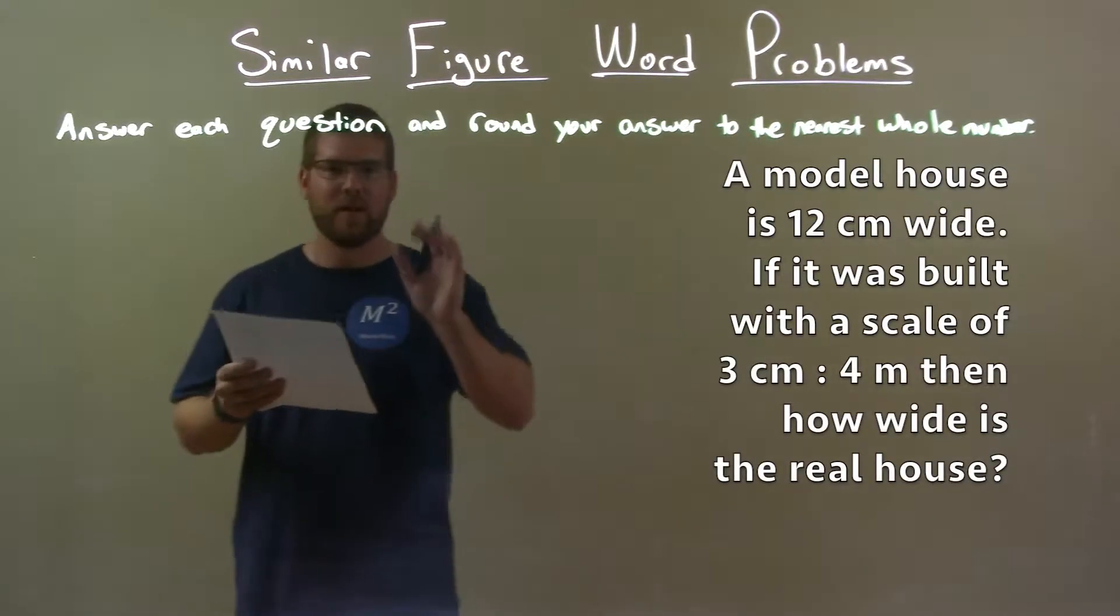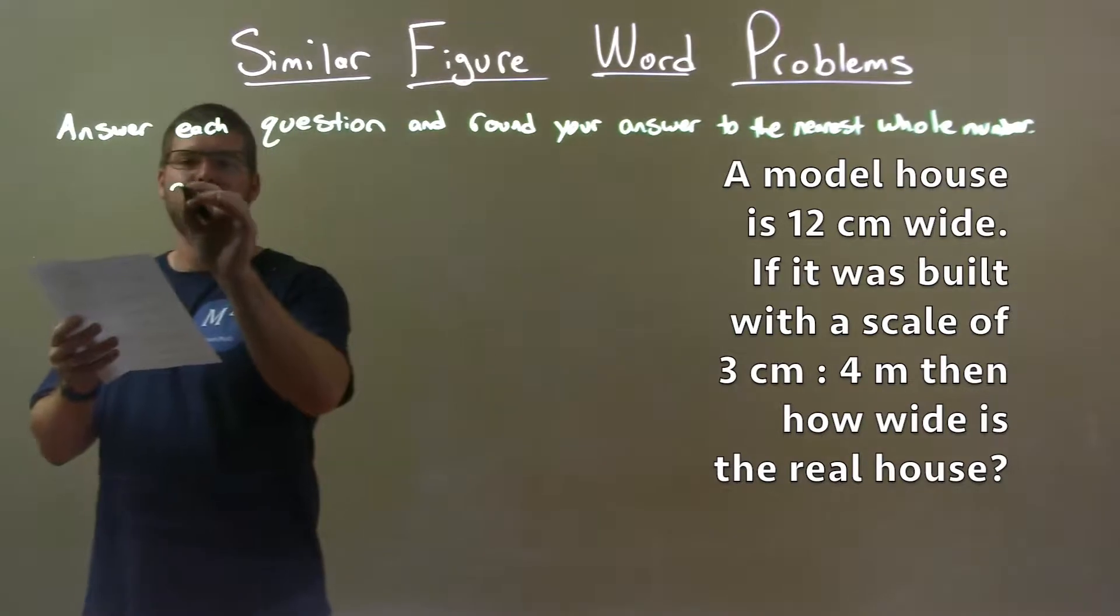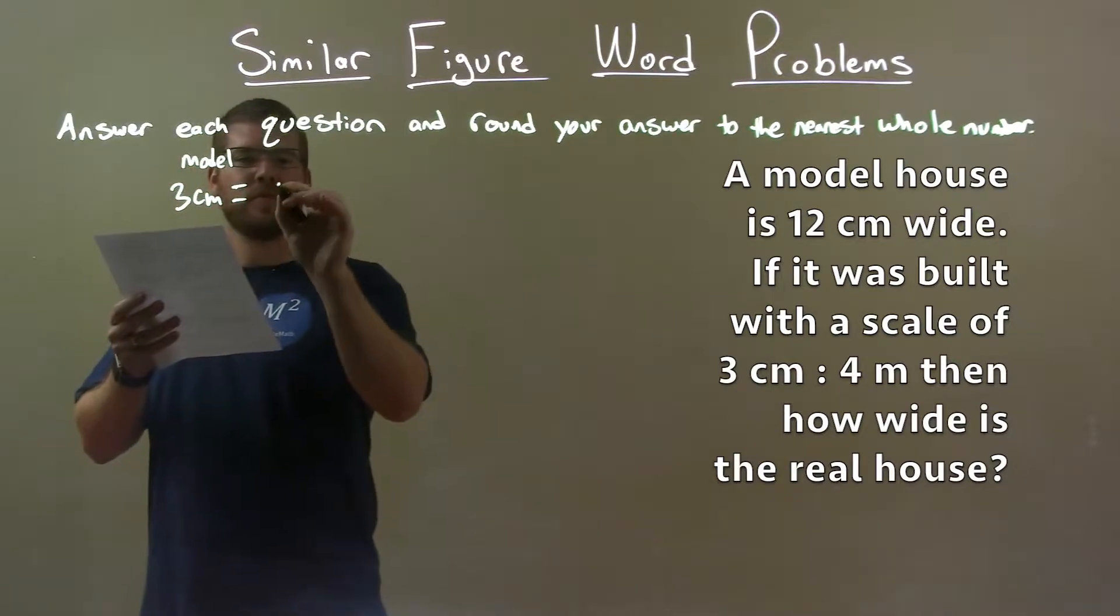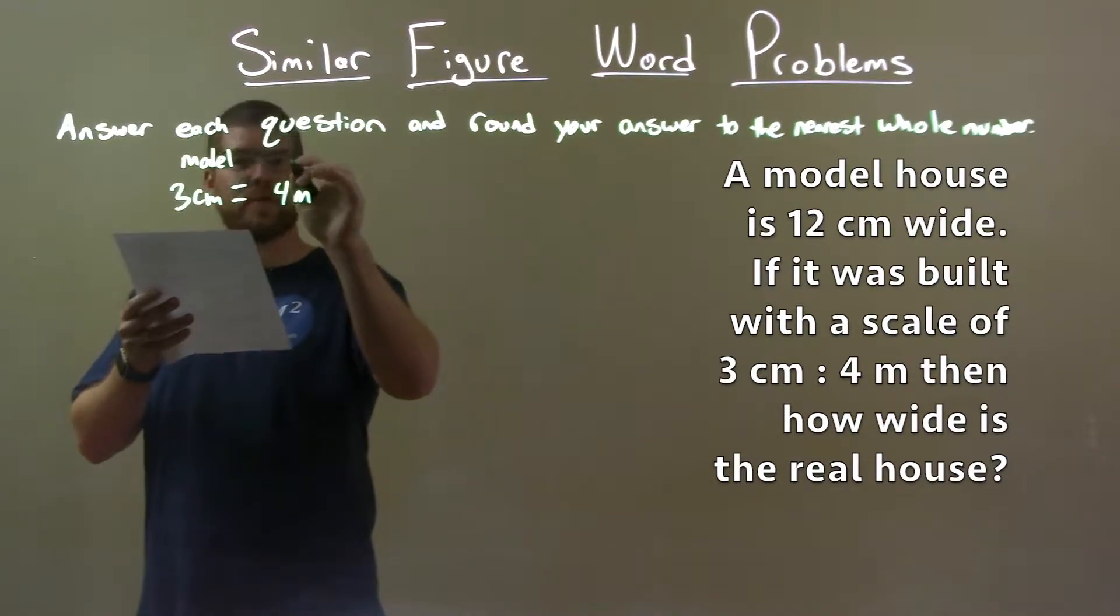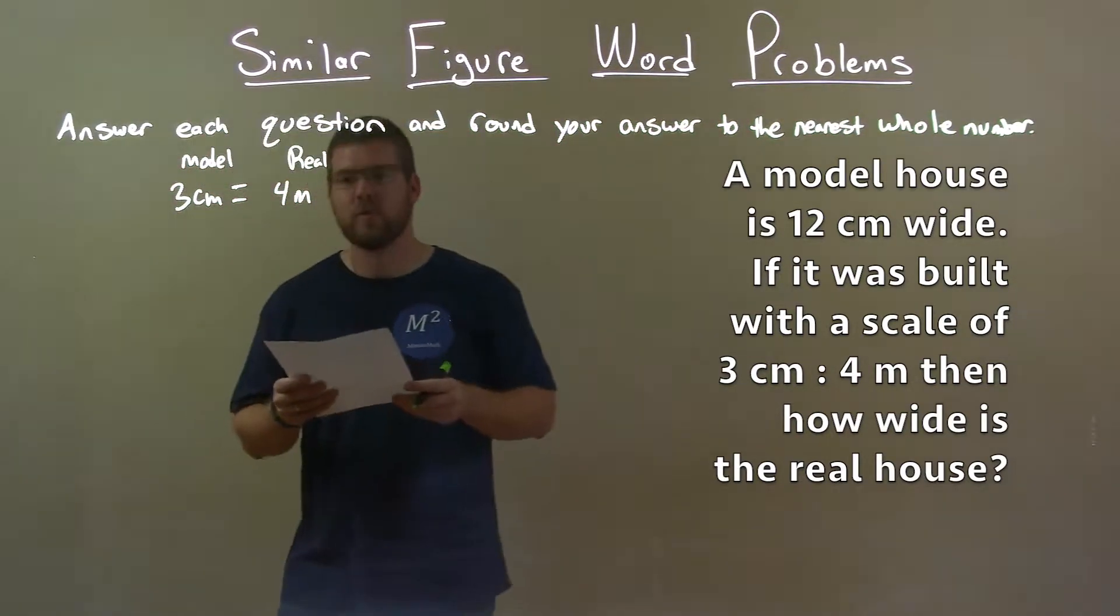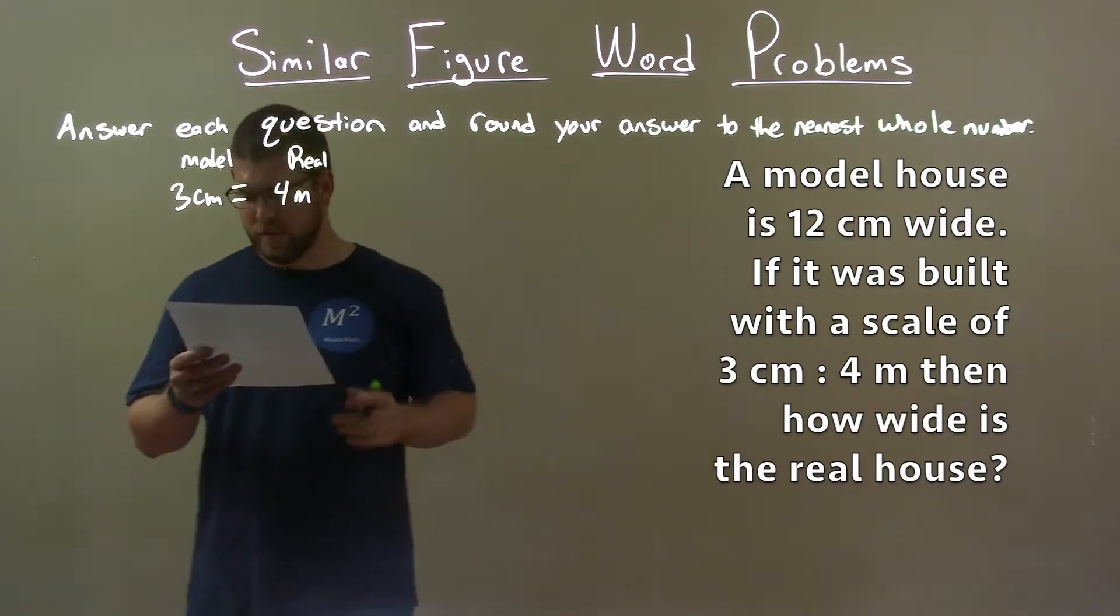So, first thing I like to write down is my scale. 3 centimeters for the model is equal to 4 meters on the real house. So 3 centimeters in the model is 4 meters in real life for this house.